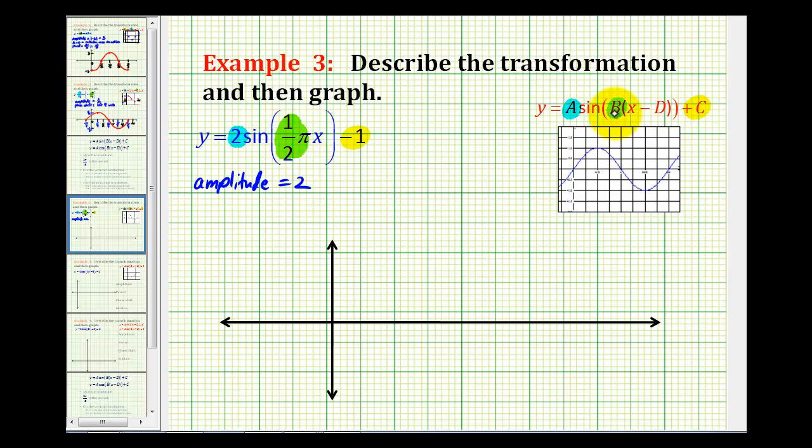Two pi divided by B will tell us the period. So two pi divided by one-half pi, or pi over two. Well, that's the same as two pi times two over pi. So notice how in this case, the pi's simplify out, and our period is equal to four units. There's no pi in our period this time, which may seem strange, but actually makes it easier to graph.